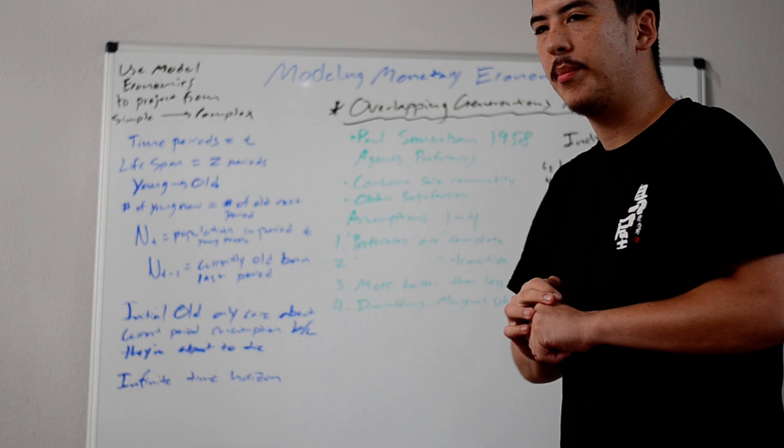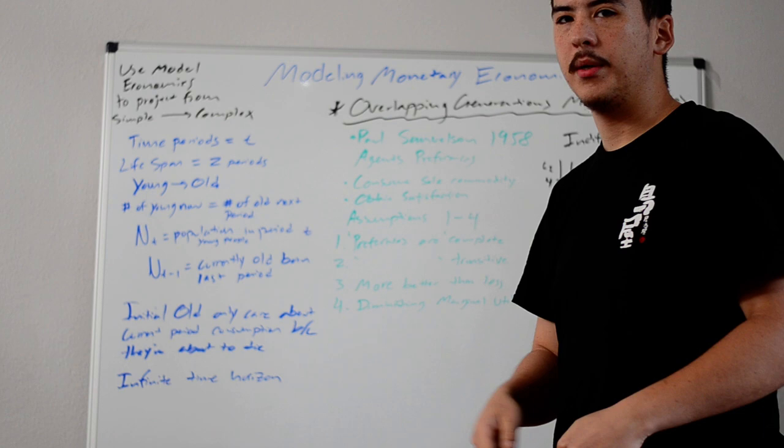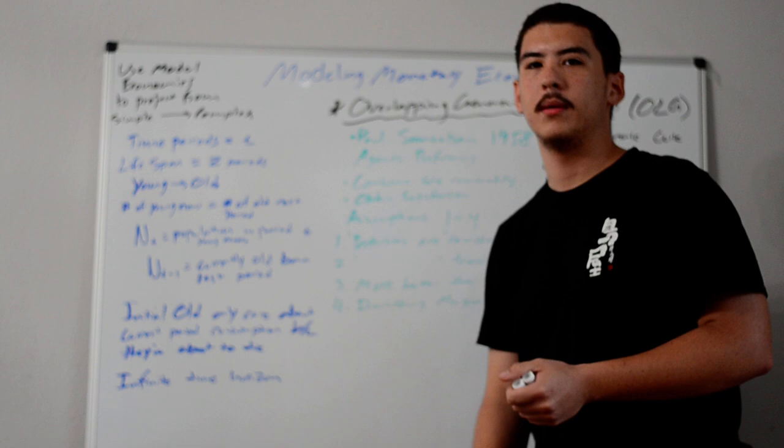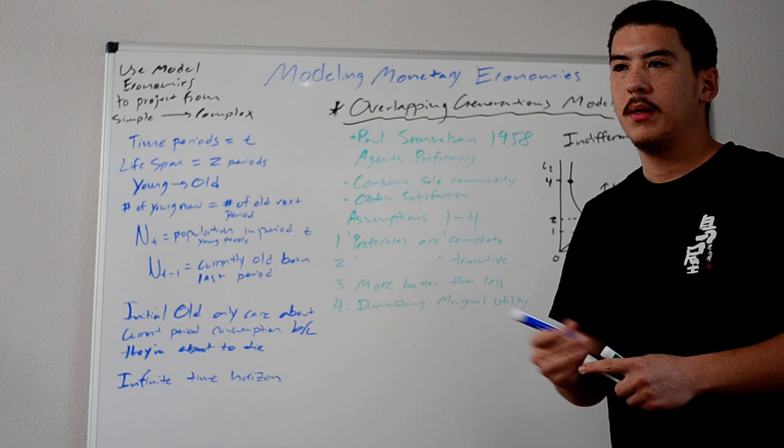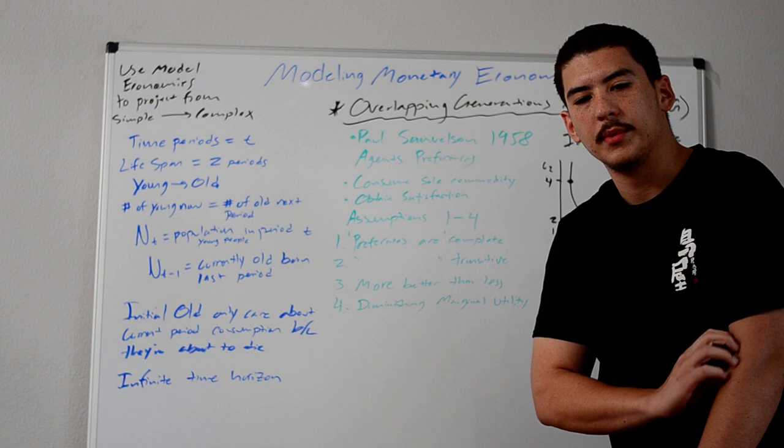When the model begins, there's always going to be a group of initial old people. They only care about consuming in this period, because next period, they won't exist anymore. That's very important and very critical to the model. You also need an infinite time horizon for this to work. You'll understand why later on, but that is very critical to the model working.